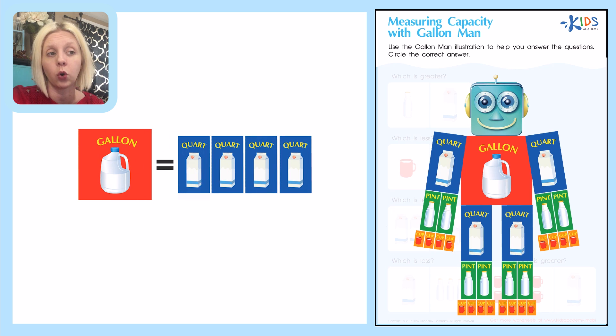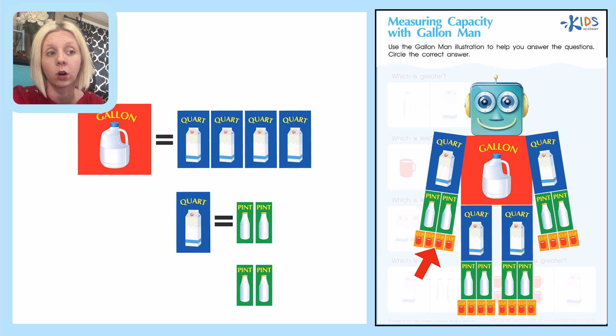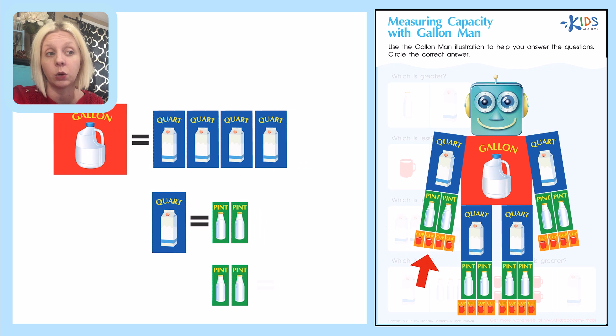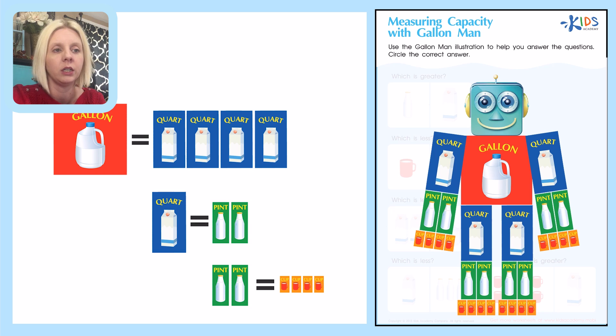And then from the quart, it looks like two pints equals a quart, and four cups equals two pints. So this is going to help us figure out some amounts here.